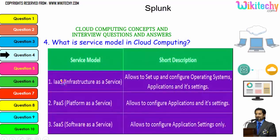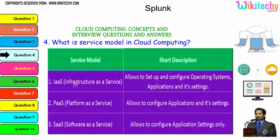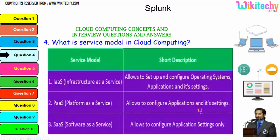The major service models are three. First, Infrastructure as a Service — you are allowed to set up and configure the operating system, applications, and settings; you are given a server and can put whatever you want on it. Second, Platform as a Service — you are allocated a specified operating system and can install any applications. Third, Software as a Service — you are given software and can configure application settings as needed.